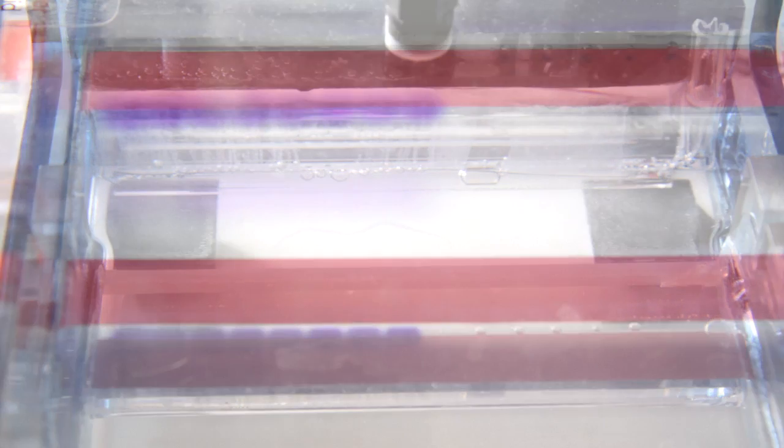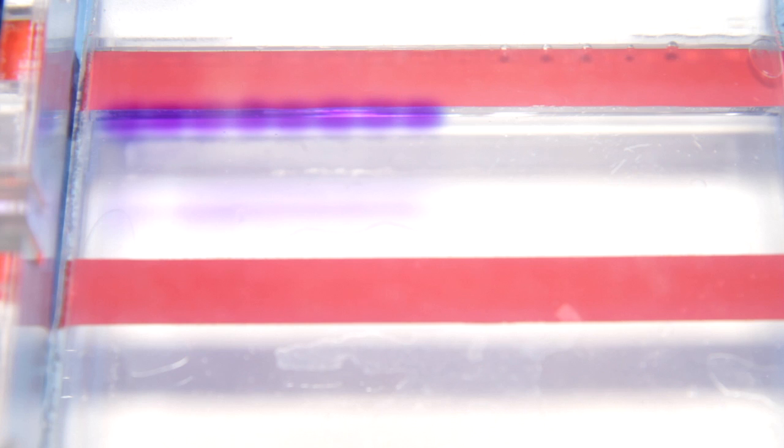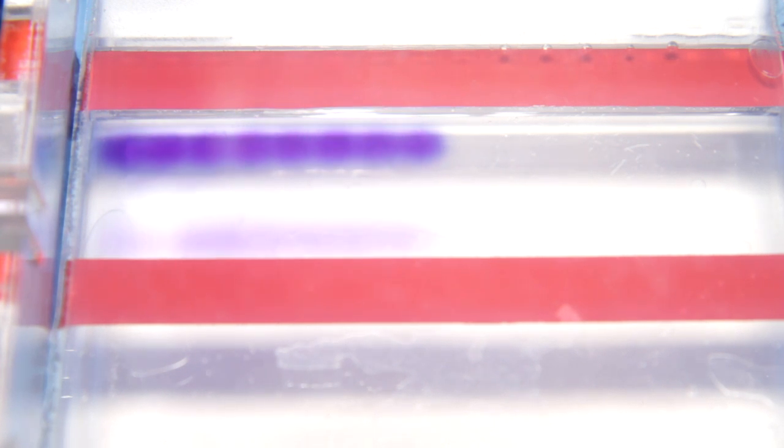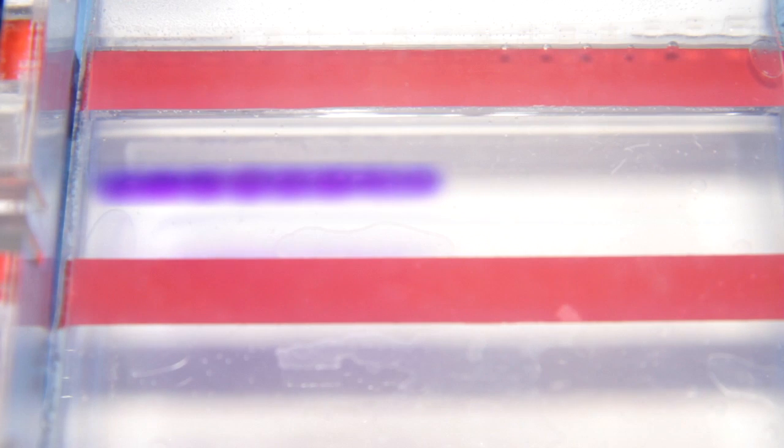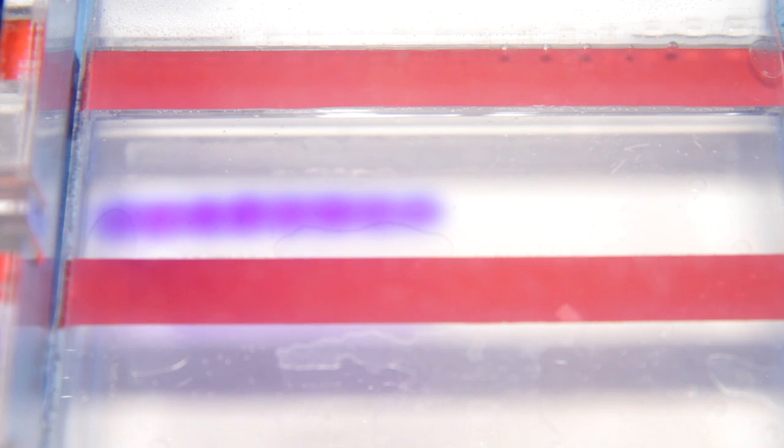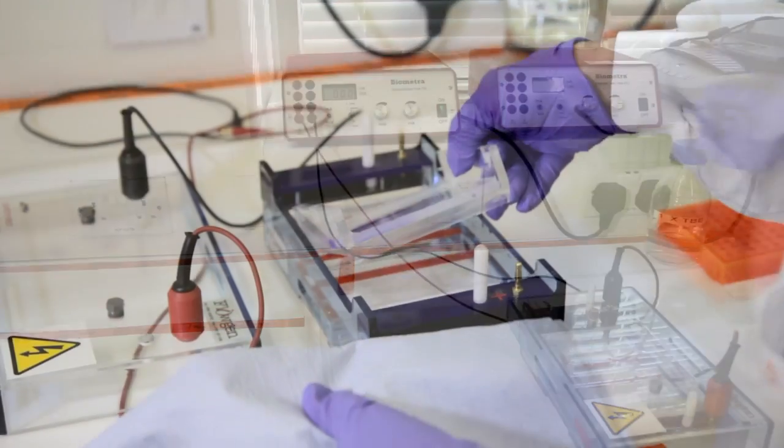You now need to let the gel run, and check it periodically. Gels often start running fairly slowly, but then speed up as the temperature warms up. The distance the DNA has migrated in the gel can be judged visually by monitoring the migration of the tracking dyes. When adequate migration has occurred, switch off the power and remove the gel tray.